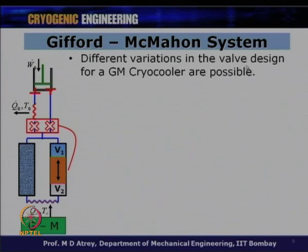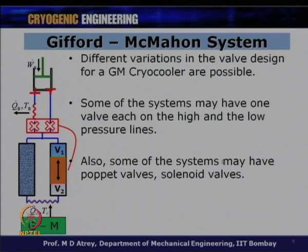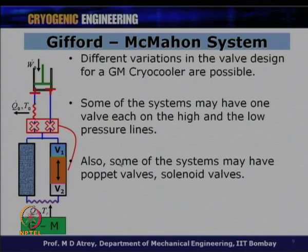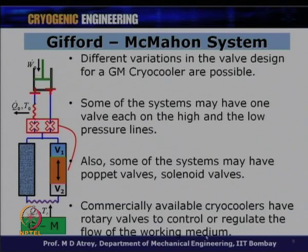The timing of the valves — opening and closing — is in relation with the position of the displacer, which is vital for optimum operation. In a GM system, there is a relation between the pressure pulse generated by the valve mechanism and the displacer motion. Different valve designs are possible: some systems have one valve each on the high and low pressure side; some may have poppet valves as in IC engines; some use solenoid valves. Most commercially available cryocoolers use a rotary valve driven by a motor.